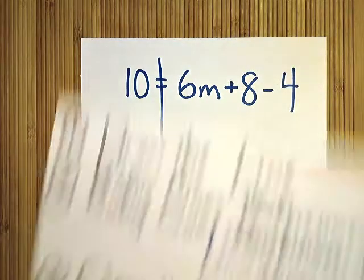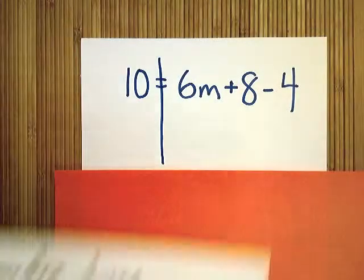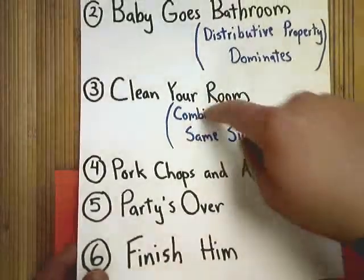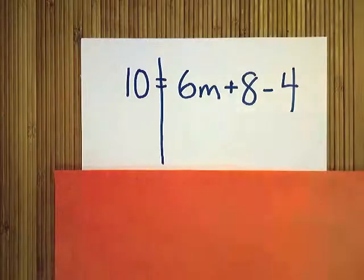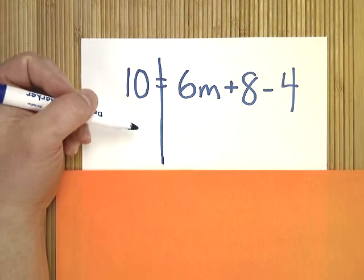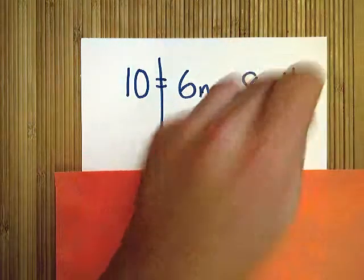The second step would be baby goes bathroom, but you see there's no distributive property, so no need to worry about that. The third step would be clean your room. Combine like terms on the same side of the line. So we're going to look at both sides of this line. There's just a 10 over here, so that's good. On this side, we have 6m plus 8 minus 4.